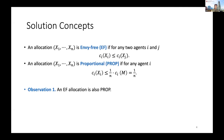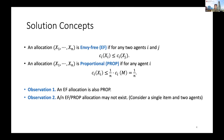An envy-free allocation is also proportional, but an envy-free or proportional allocation may not exist. A simple counter example is if there is a single item — a single chore — but we have two agents. No matter to whom we allocate the item, this is not fair to the other agent regarding both envy-freeness and proportionality. So we want to design proper relaxations for these two solution concepts.